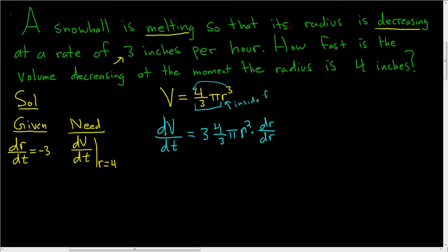The inside function here is r. The 3's cancel, so we have dV/dt equals 4 pi r squared dr/dt.